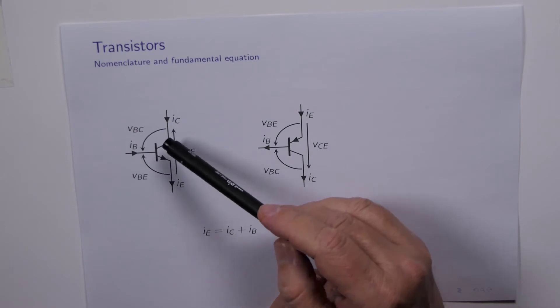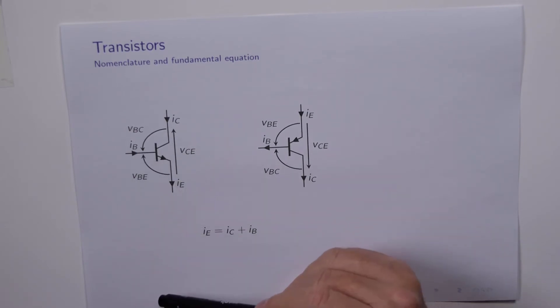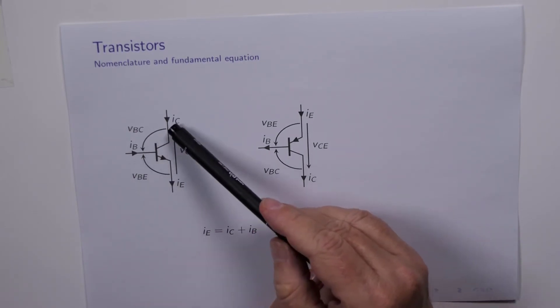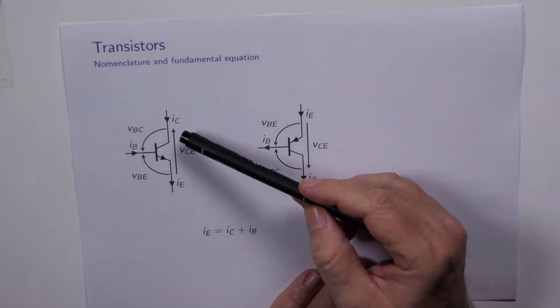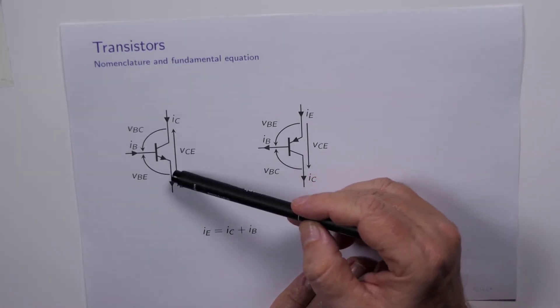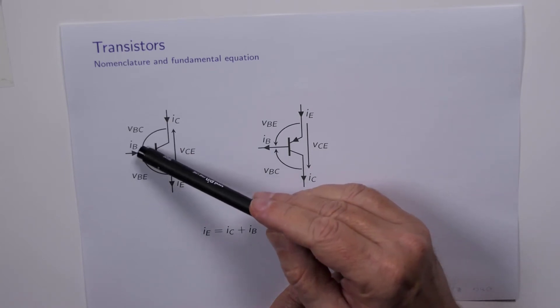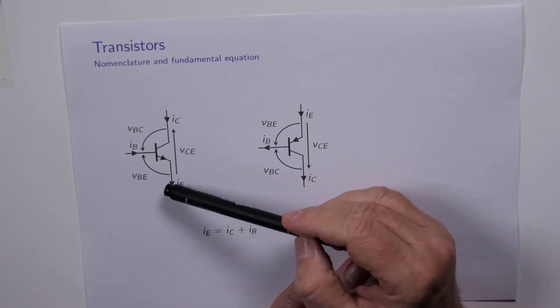We've also got three possible terminal voltages to measure because we've got three pairs of terminals, so we have VCE, for example, the voltage from the collector to the emitter. We've got the base to the collector and the base to the emitter.